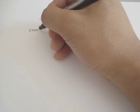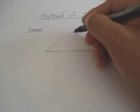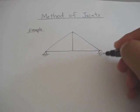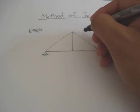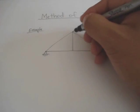So for example you have a simply supported truss like such supported by pin at one end and the roller at the other end and so you have a 5 kip force applied at that joint right there.